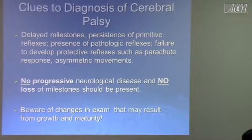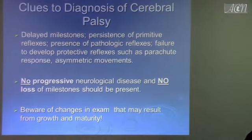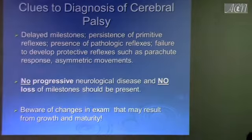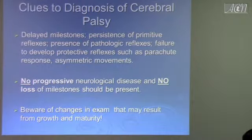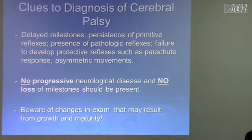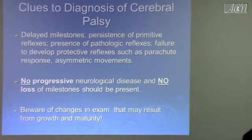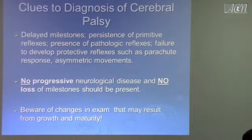What are the clues to diagnosis of cerebral palsy? Delayed milestones — the kid would not be meeting milestones. Persistence of primitive reflexes: Moro reflex, asymmetric tonic neck reflex, sucking reflex, grasp reflex, rooting reflex, and startle reflex.